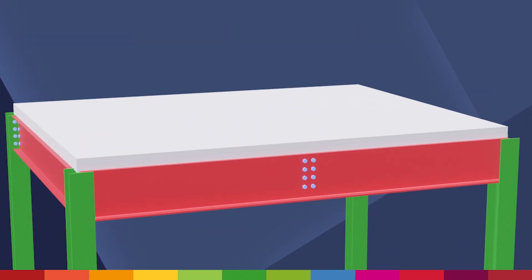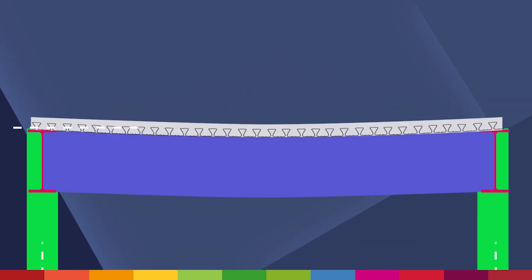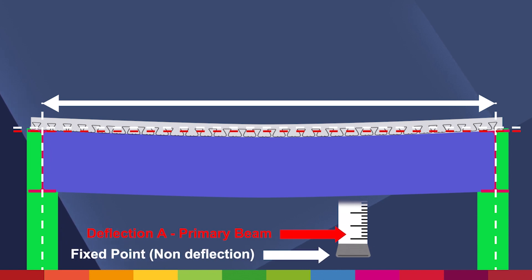The secondary beams are connected to the primary beams. The contact point where the two beams connect will already be at deflection A point, a lower starting point from the fixed datum level. The level of deflection for the secondary beams varies depending on size and methods, such as pre-cambering.